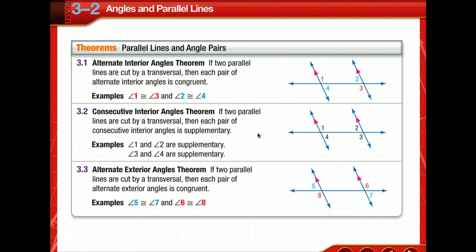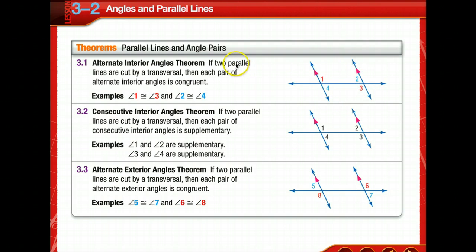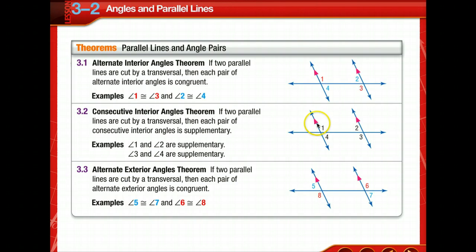Now we have the parallel lines and angle pairs theorems. If we have two parallel lines — notice all of these are marked parallel — and a transversal, these theorems only work if the lines are given or marked as parallel; we can't just assume it. If two parallel lines are cut by a transversal, then each pair of alternate interior angles is congruent, each pair of consecutive interior angles is supplementary, and each pair of alternate exterior angles is congruent.